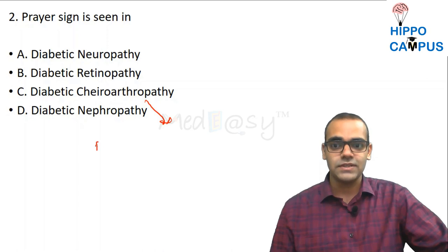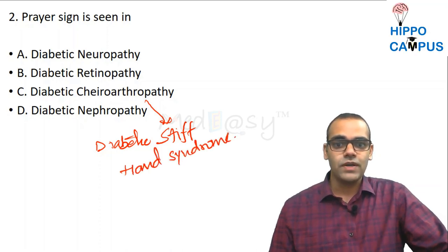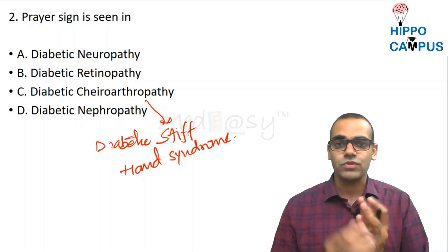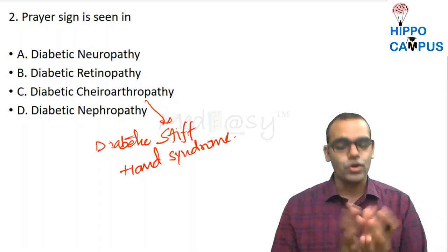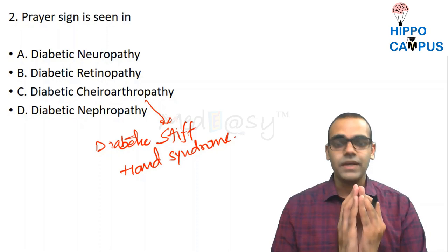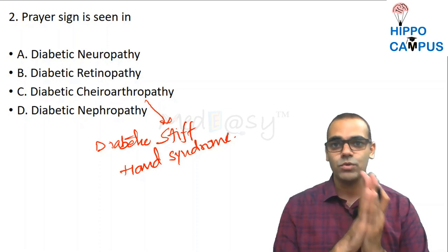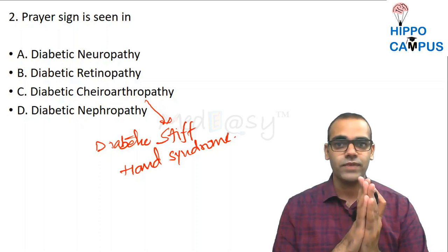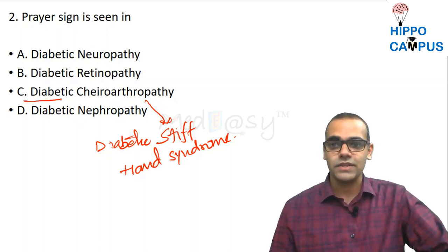Diabetic cheiropathy is also known as diabetic stiff hand syndrome. It is because of limited mobility due to thickening of the skin, causing joint contracture. The patient is not able to contact both hand fingers fully. So prayer sign is positive in diabetic cheiropathy.